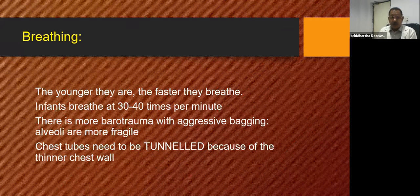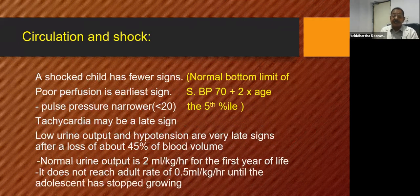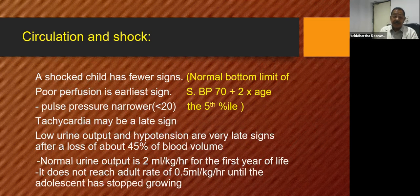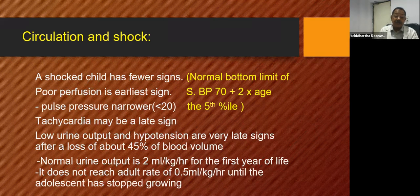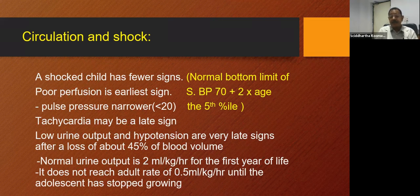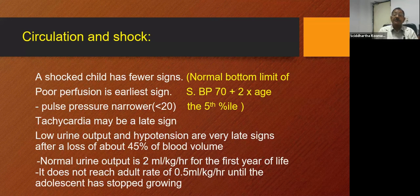Regarding circulation and shock, a shocked child has fewer signs. Poor perfusion is the earliest sign, in the form of increased capillary filling time and tachypnea. Pulse pressure is narrower, less than 20. Even tachycardia may be a late sign. Low urine output and hypotension are very late signs and should not be waited for. After a loss of about 45% of blood volume, hypotension may occur. Normal urine output is 2 ml per kg per hour for the first year of life. The concentrating ability of the kidneys is limited, so reduced urine output may indicate kidney injury. The lower limit of normal systolic blood pressure before shock at the fifth percentile is given by 70 plus age in years multiplied by 2.